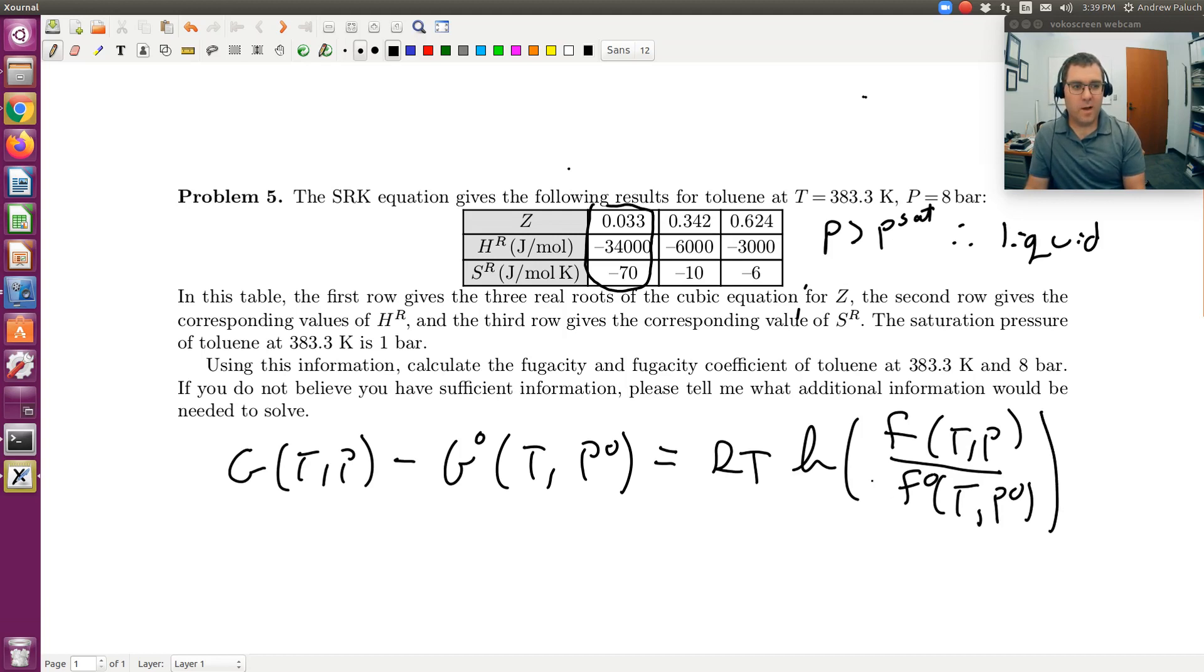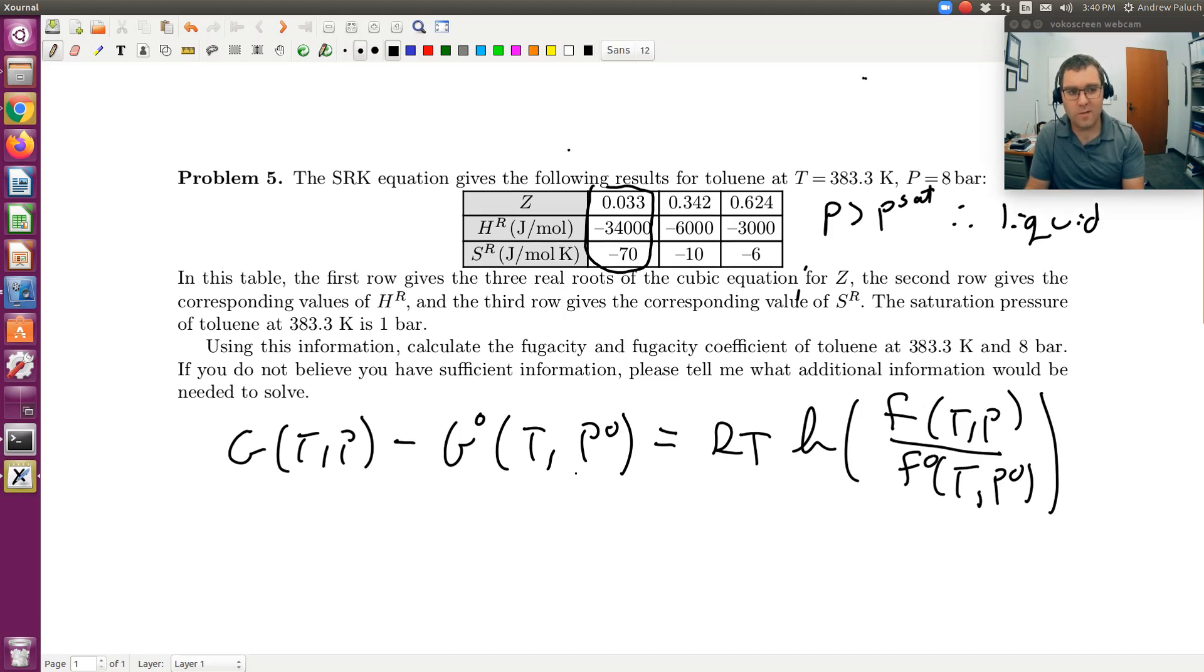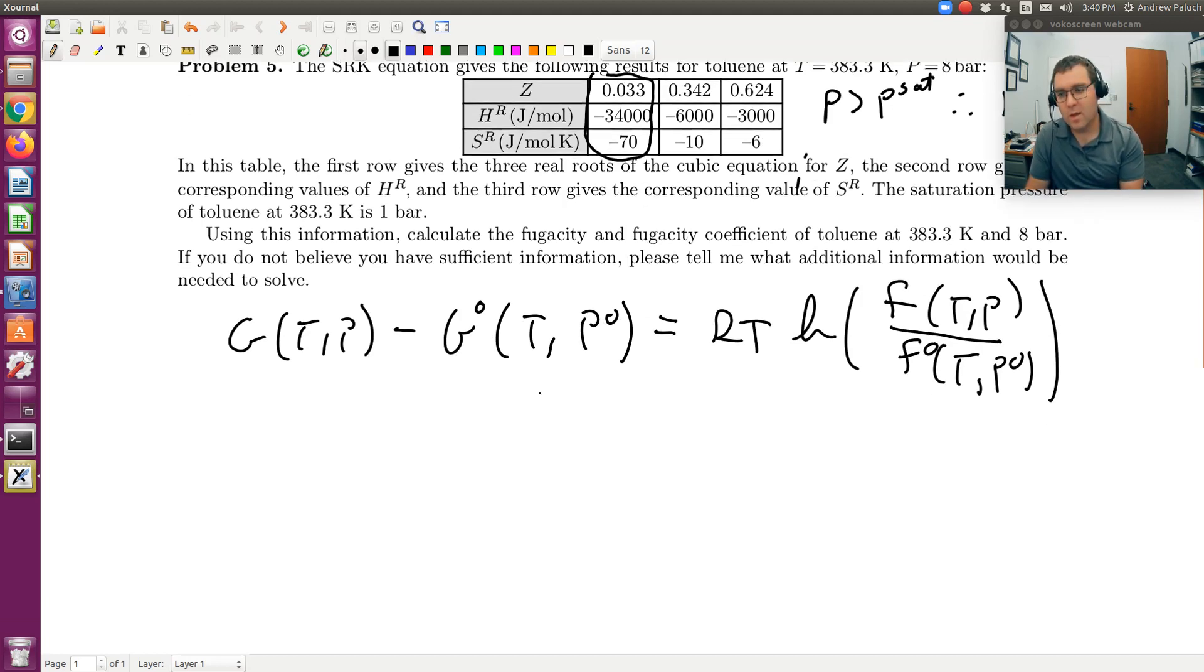Where G naught and F naught essentially correspond to some reference state or standard state. What we're looking at is relative Gibbs free energies, the relative Gibbs free energy between two states at the same temperature, but not necessarily at the same pressure. And here's a log ratio of fugacity. Again, two states at the same temperature, but not necessarily the pressure.